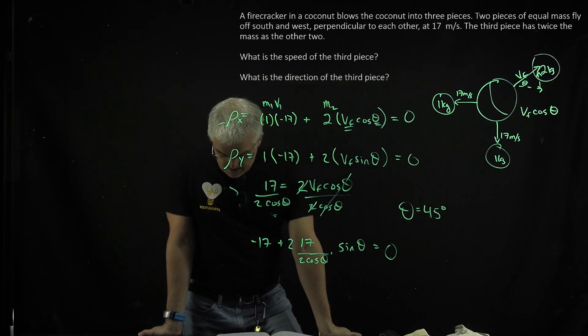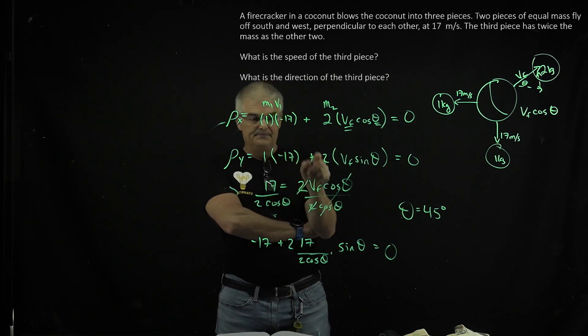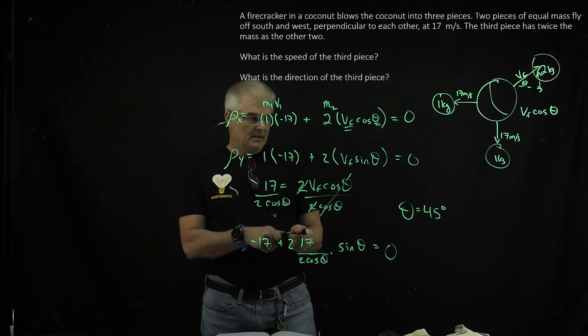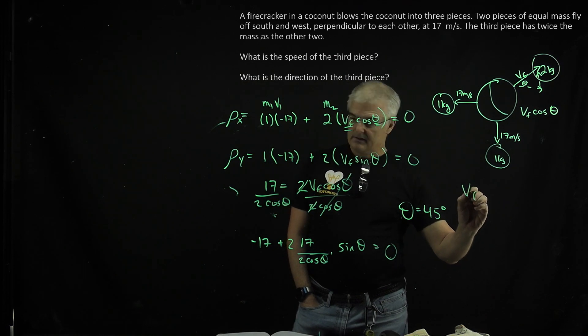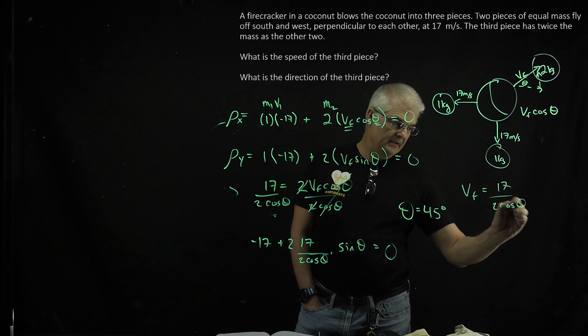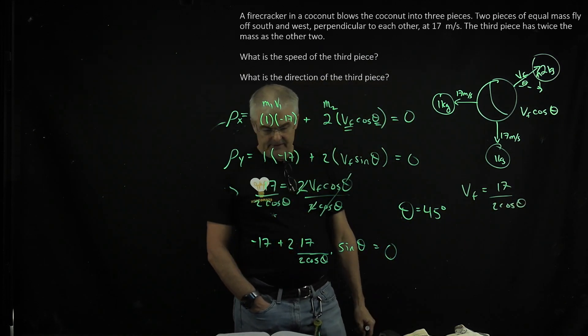And then the question is, what speed does it have? Well, guess what? If I know that in this equation, vf equals 17 over two cos theta, if you put 45 degrees in here, you can find the vf. And that's how you do it.